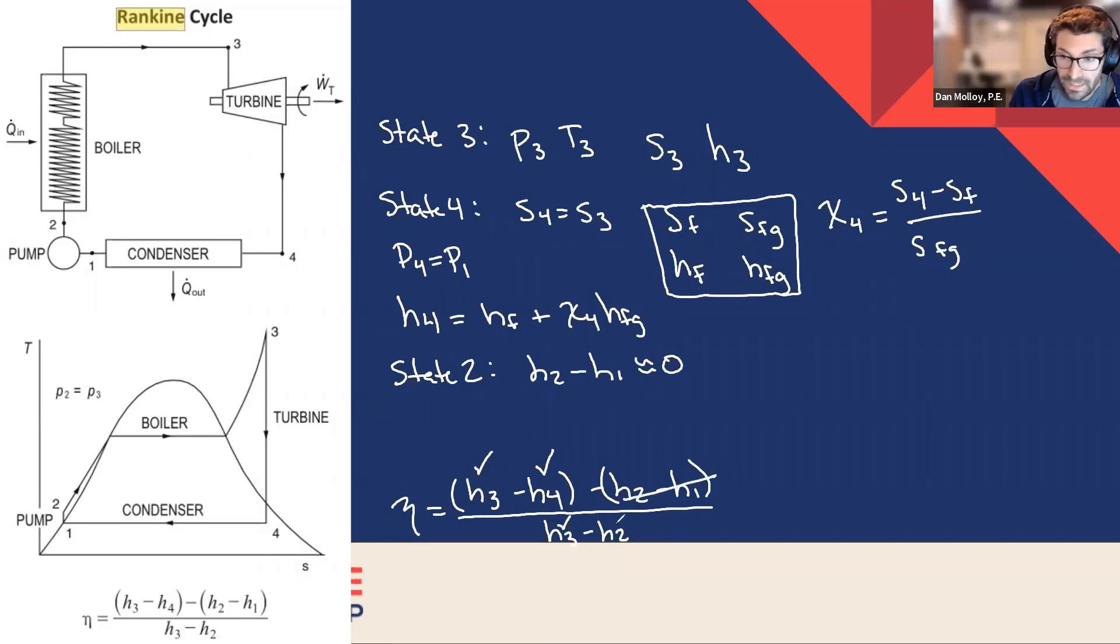So now we're analyzing state two and saying that H2 minus H1 is approximately zero, which makes this whole term go away, but we still need the value of H2. But since this is true, we can say H2 equals H1 and H1 is easy to find because we know the pressure at one. And we know that it's a saturated liquid with a quality of zero because it's on the left side of the saturation curve. So we can say H1 equals HF at P1. And that's coming out of the saturated table as well.